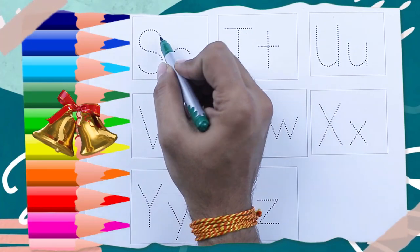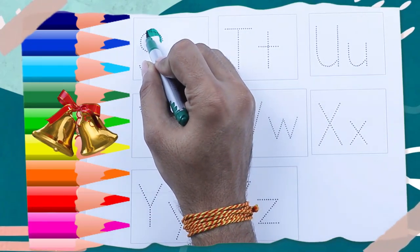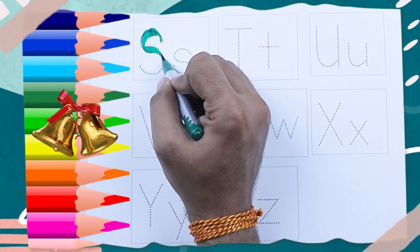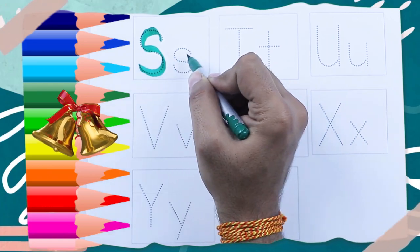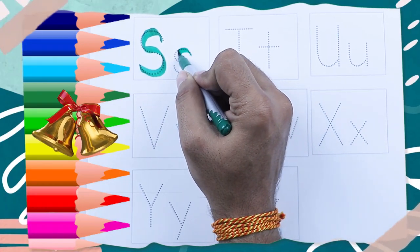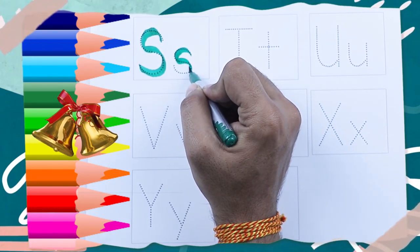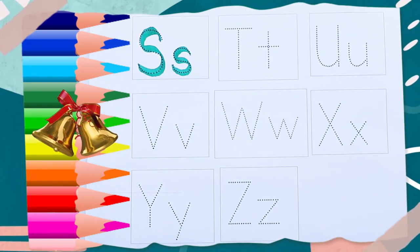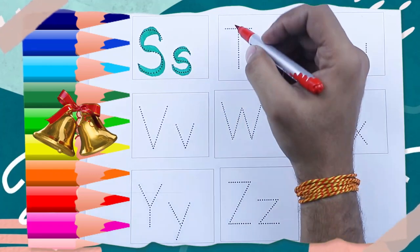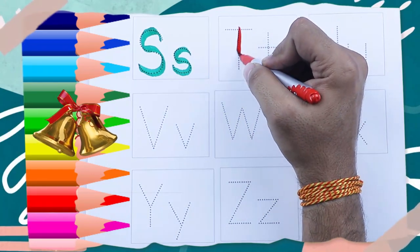Green color capital S — S for Sheep. Green color small s — s for Sheep. Red color capital T — T for Tiger.